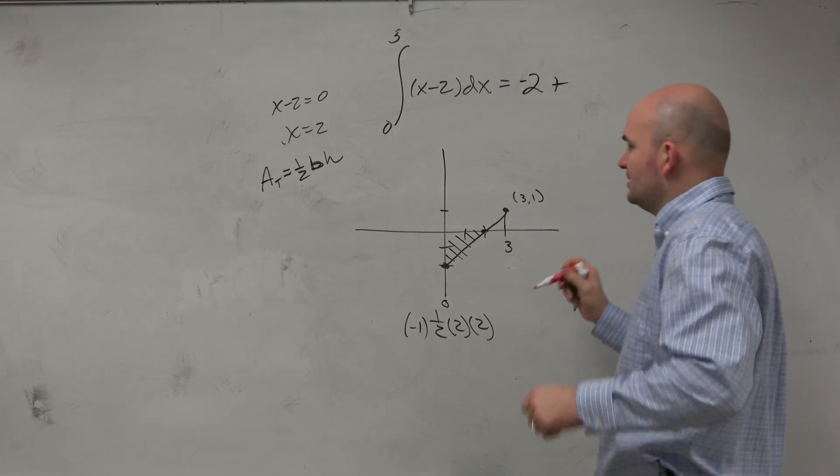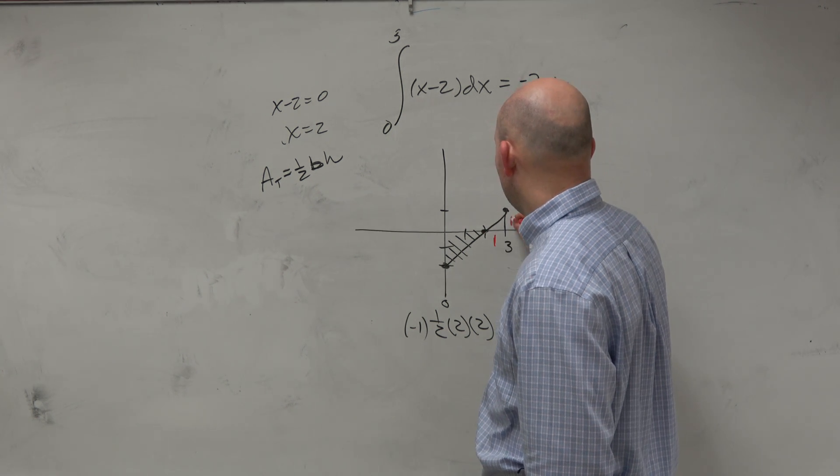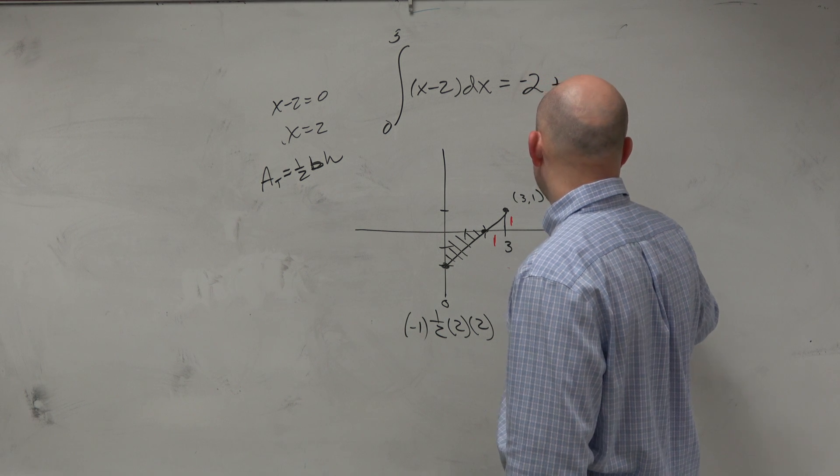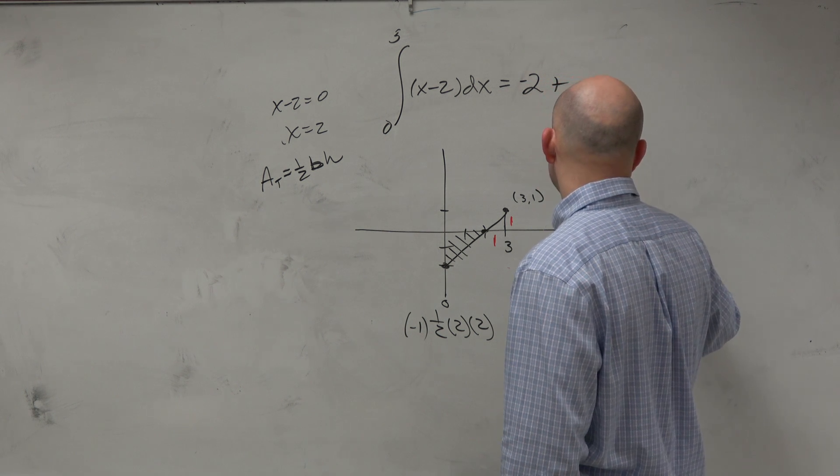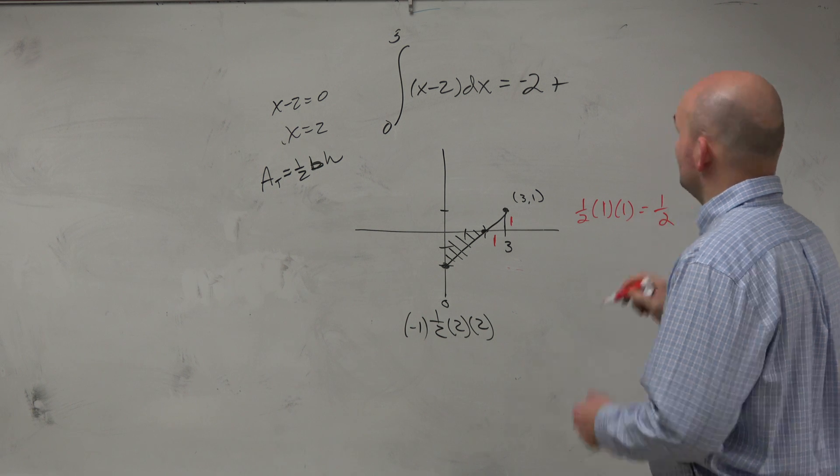And then over here, let's figure out what this is. So if that's 2, 2 to 1 is 1. That's 1. And that's positive. So it would be 1 half times 1 times 1, which equals a positive 1 half.